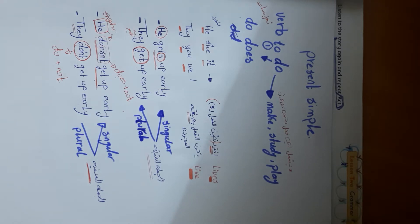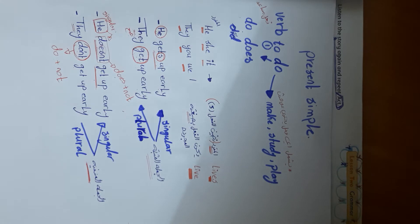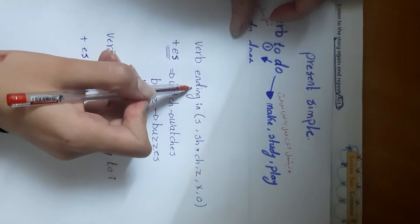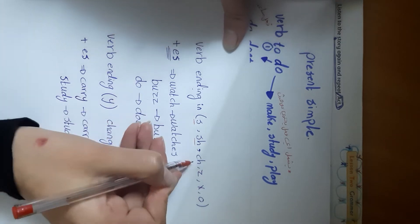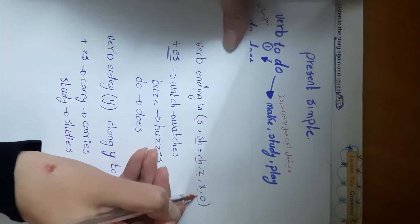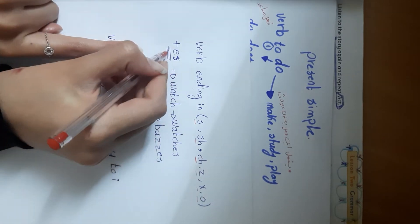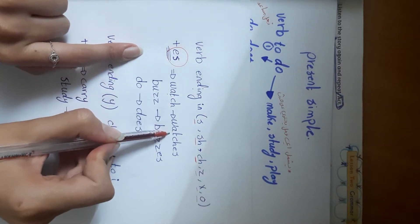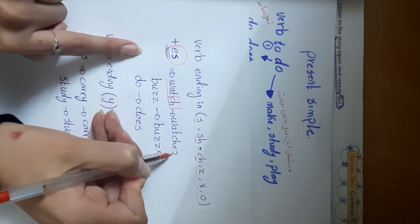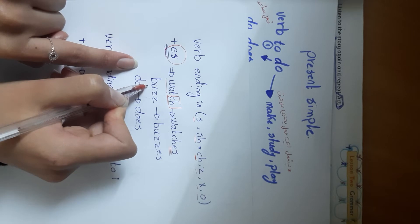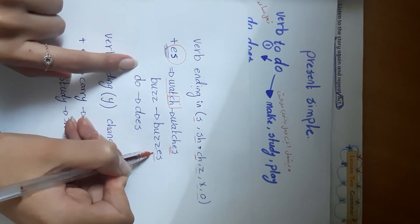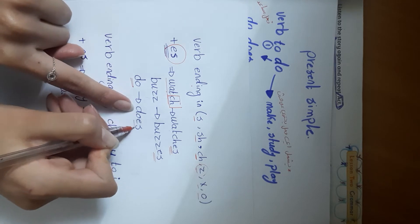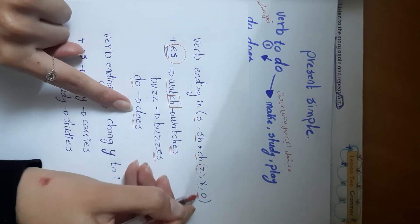When do we add -es to the verb? For words that end in certain letters, we must add -es. For example, 'watch' ends in '-ch,' so we add -es. 'Buzz' ends in '-z,' so we add -es. 'Do' ends in '-o,' so it becomes 'does.'